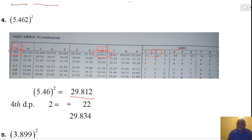And we are supposed now to add these values. We are going to let the last digits of 29.812 and the last digit of 22 to correspond. And then we add them in that order. Hence, our square of 5.462 is equal to 29.834.